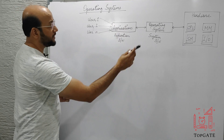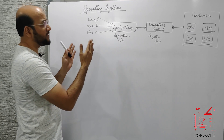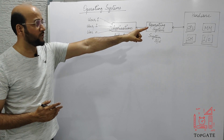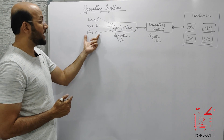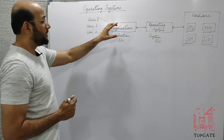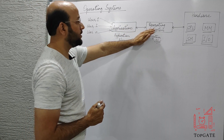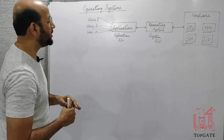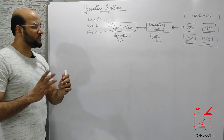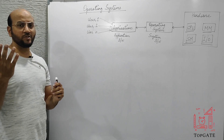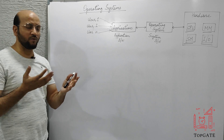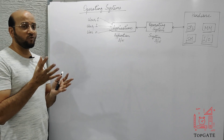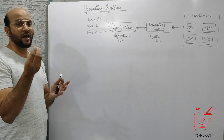If we see this diagram, it is actually explaining the major functionality of the operating system. There are a certain number of users who want to interact with the hardware of the computer system. So these users are first interacting with the applications, and these applications are in turn interacting with the operating system, and this operating system is directly interacting with the hardware. If you talk about the applications — whenever we switch on our machines, we have Microsoft Office, we have VLC Media Player, and some other applications. So all these are the applications with the help of which I can use the capabilities of the actual hardware of the machine.